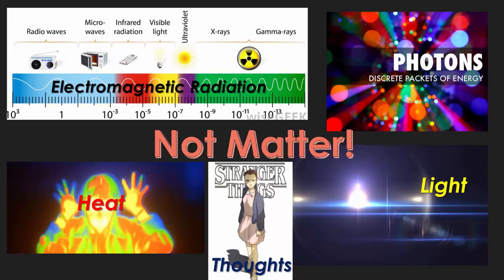Some things that are not matter — and we're going to be covering them throughout the year — could be things like electromagnetic radiation. That's stuff like gamma rays, x-rays, ultraviolet radiation, visible light, infrared, microwaves, and radio waves, which make sound. Also, what's not matter is heat, light, photons, and mental thoughts.